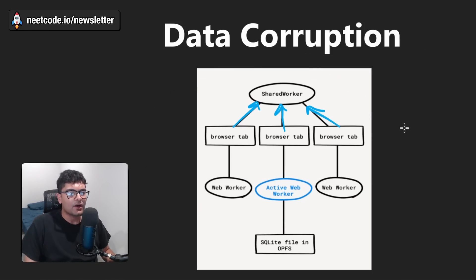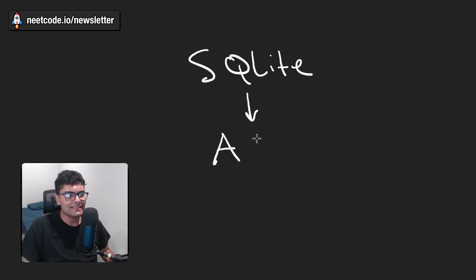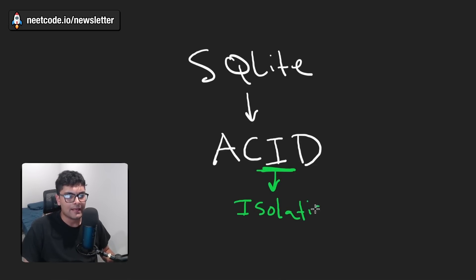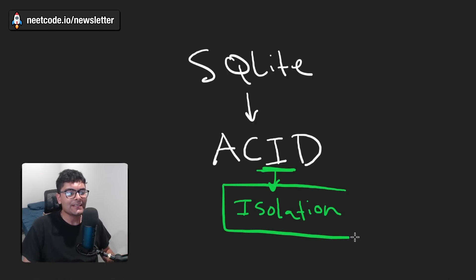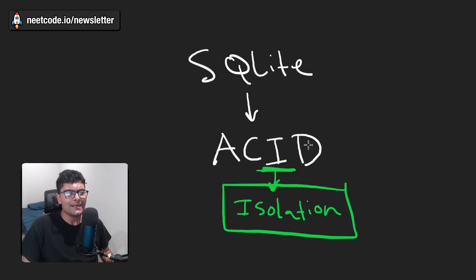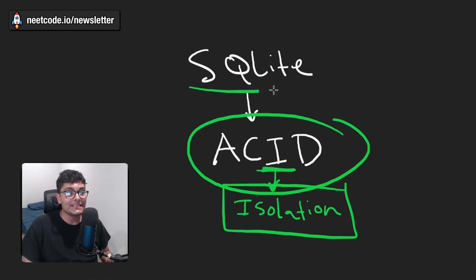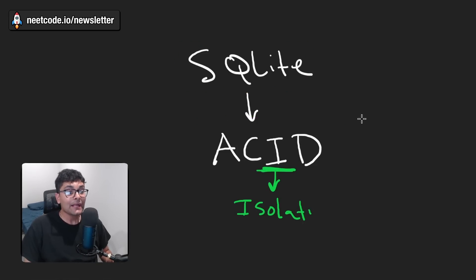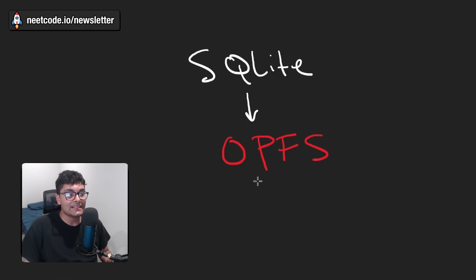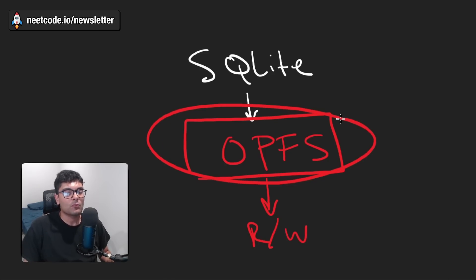Now, I heard that SQLite is actually ACID compliant — and it is. More specifically, we focus on the I, which stands for isolation. Isolation in general should mean that multiple concurrent writes will not interfere with each other and definitely shouldn't result in data corruption. So it seems like there's a contradiction. Why is that? Well, it wasn't SQLite's fault actually. According to Notion, it was actually a result of the browser's OPFS API — the Origin Private File System — which is the one actually responsible for the reads and writes. That was the part not handling concurrency correctly, resulting in data corruption. And this is exactly the kind of detail a lot of people gloss over, but I thought it was worth mentioning.